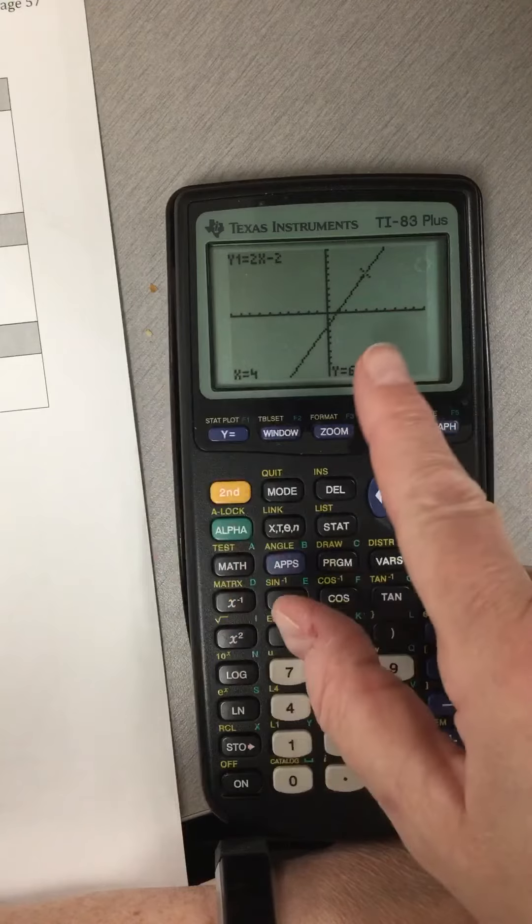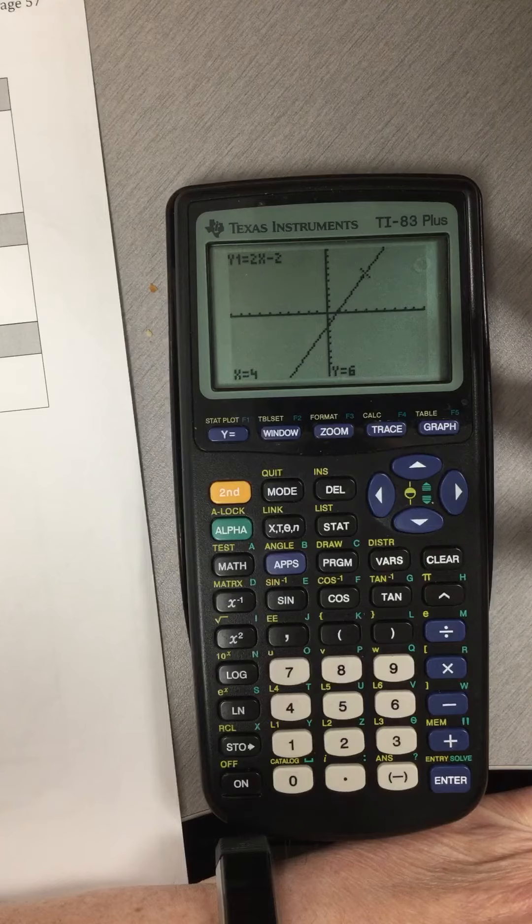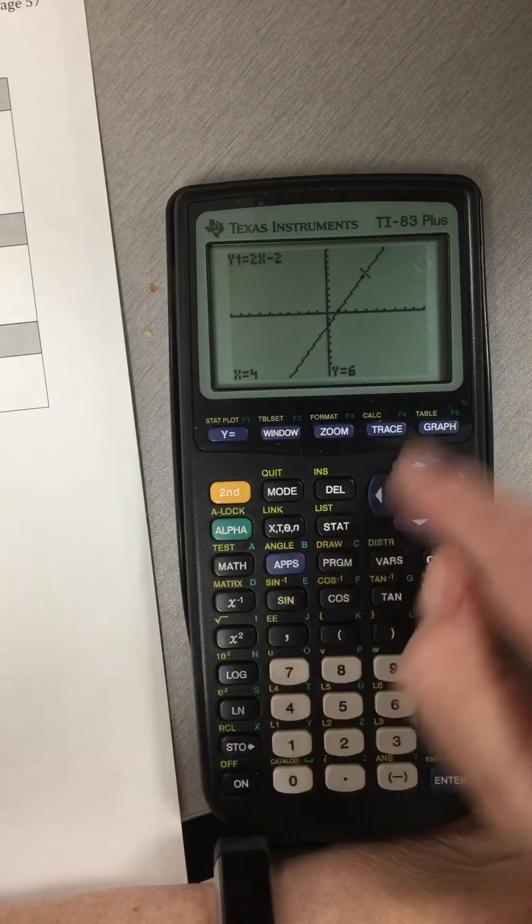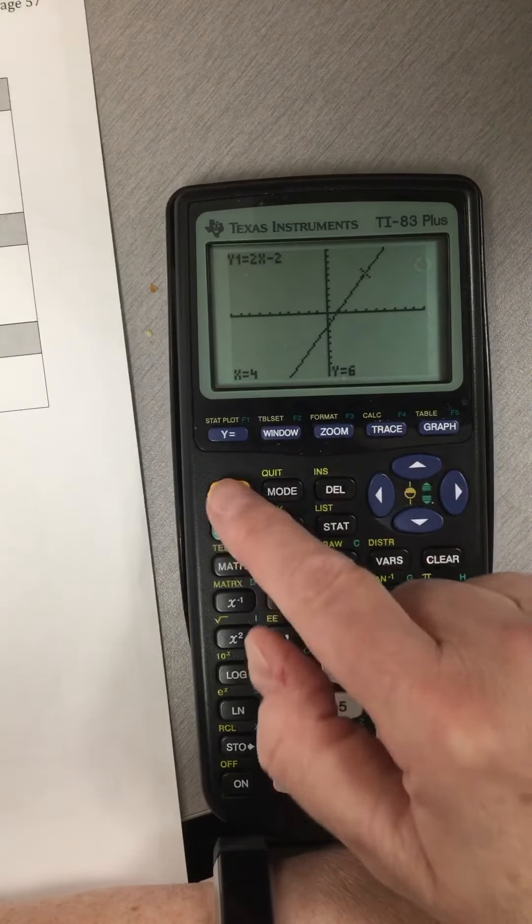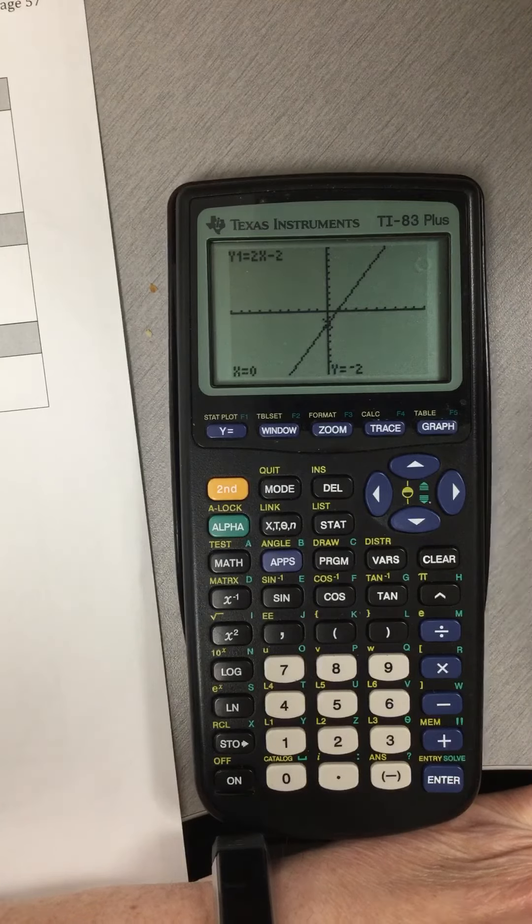So I can find out anything. If I want to know what the y-intercept is, I make x equal to 0. So I put in second, trace, value, and put in 0, and it tells me that my y-intercept is y equals negative 2.